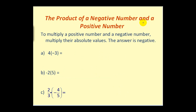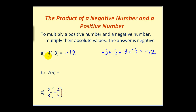Let's start by talking about the product of a negative number and a positive number. Most textbooks state the rule as: to multiply a positive number and a negative number, multiply their absolute values and the answer is negative. So 4 times negative 3 would give us negative 12. But to justify this, we could think of 4 times negative 3 as wanting 4 groups of negative 3, or adding negative 3 to itself 4 times, which would give us negative 12.